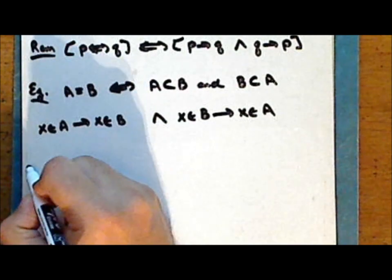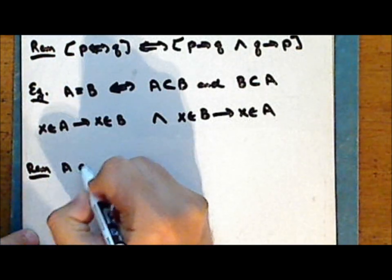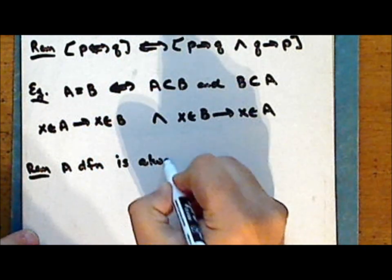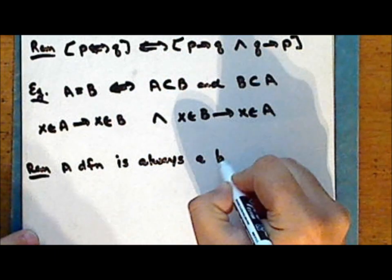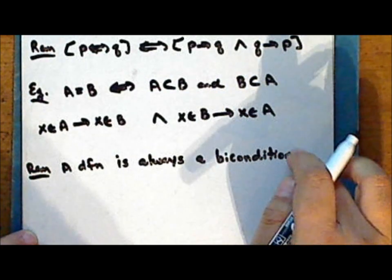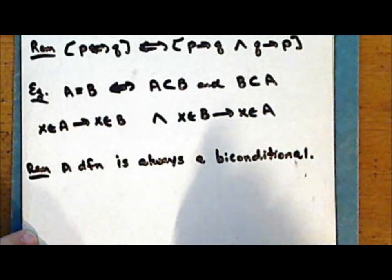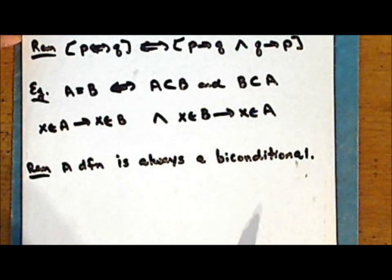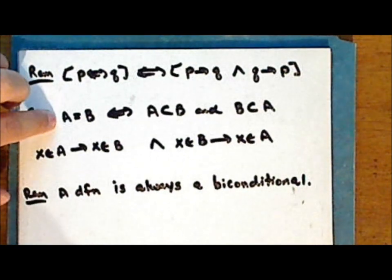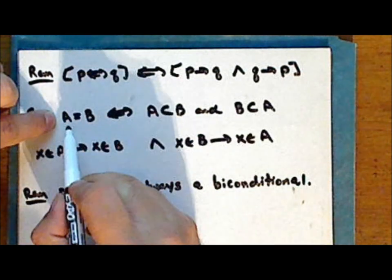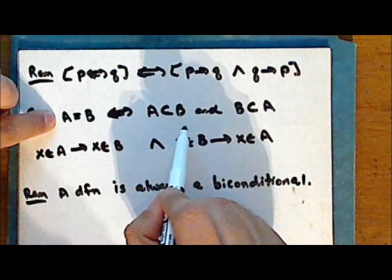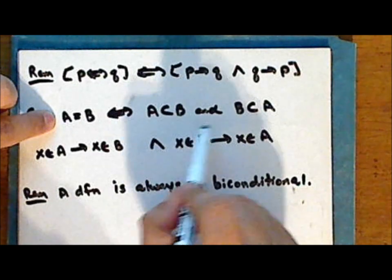This brings up an important point: a definition, whether stated as such or not, is always a biconditional. Because in a definition, one thing is said to be equivalent to another. For example, in the definition for set equality, the condition that two sets are the same is logically equivalent to the condition of simultaneous set inclusion of the two sets.